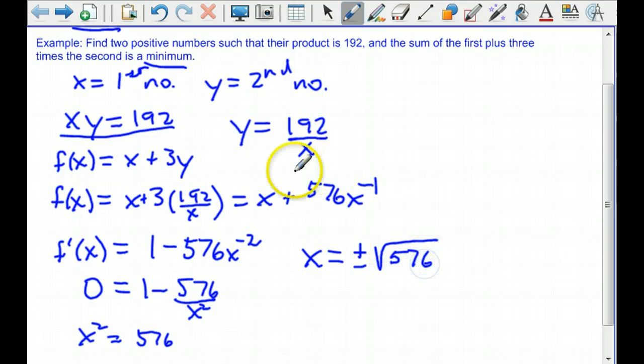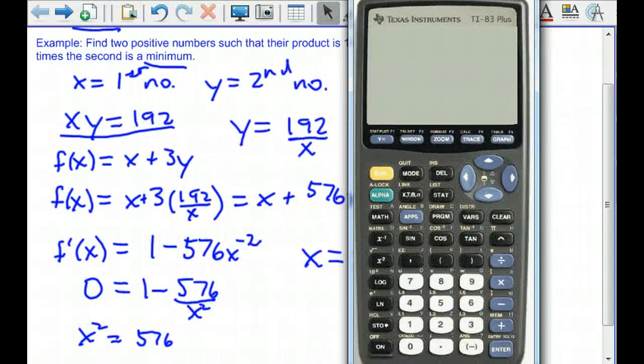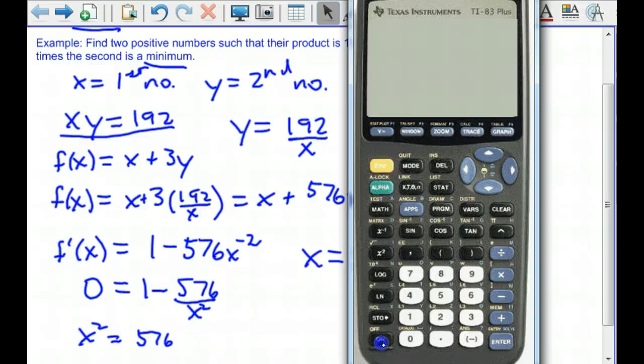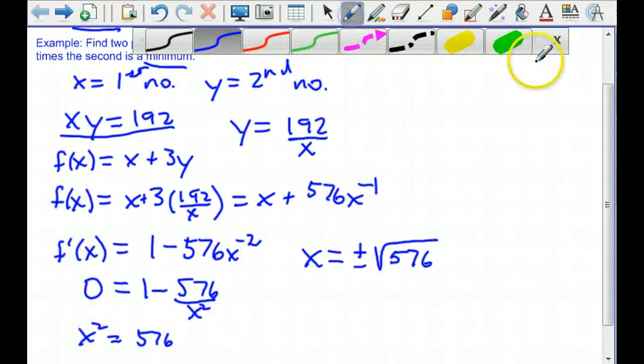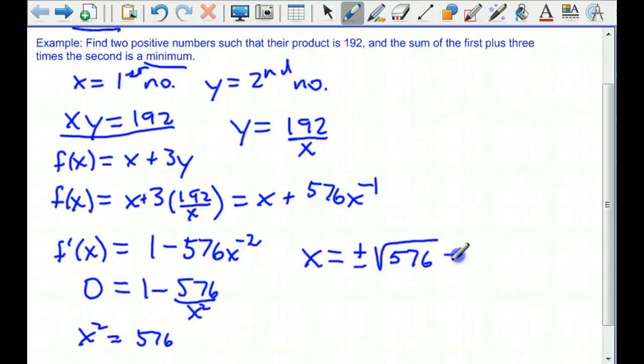Let's get our calculator. We'll take the square root of 576 and it's 24. Good, nice even number.